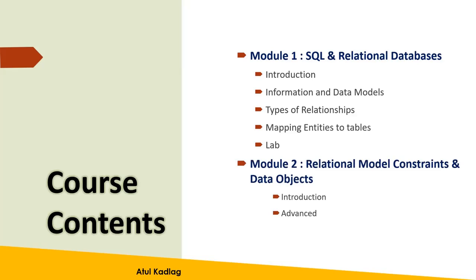The second module will cover relational model constraints and some advanced topics related to the relational model and different data objects, how we can have constraints in the relational models and why we need constraints. Constraints are the primary key, foreign keys, and that kind of constraints. We're going to see that in the second module.